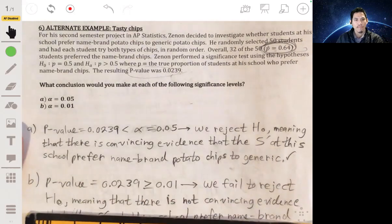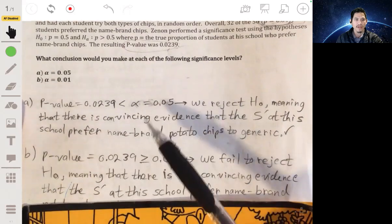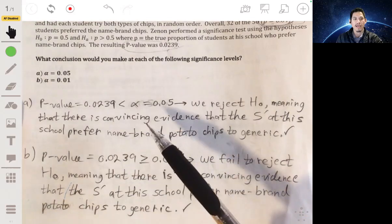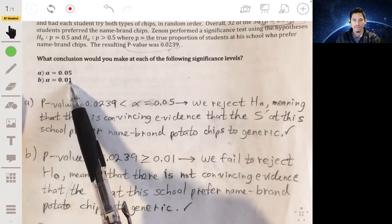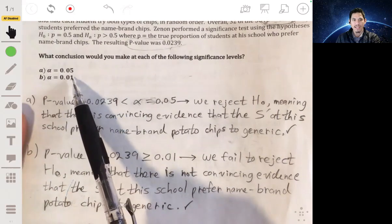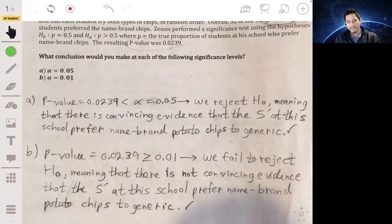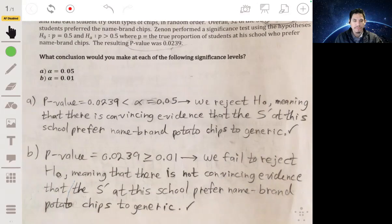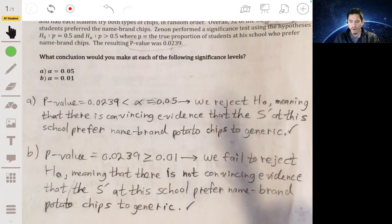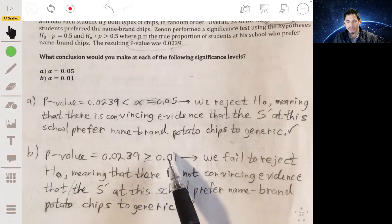And then for a p-value of 0.0 or for a p-value, the same p-value of 0.0239, but the alpha is 0.01, our p-value is not less than 1%. Since it's not less, we're going to fail to reject it. We're going to fail to reject H₀, meaning that we don't have strong enough evidence to claim that the students at the school prefer name brand potato chips to the generic ones because it didn't go below our alpha level.